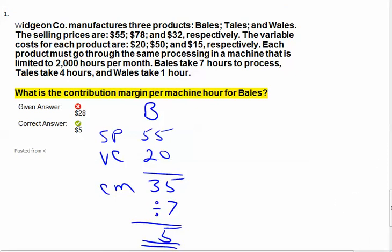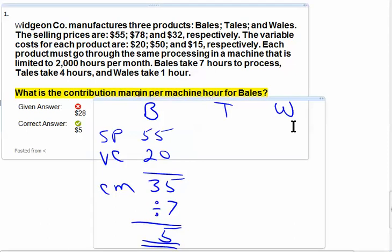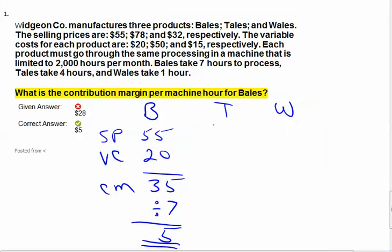I've answered the question they asked me. I'm going to expand this and go farther. Let's take a look at tails and whales. Tails has a selling price of $78 and variable costs of $50. Whales has a selling price of $32 and variable costs of $15. I can calculate my contribution margin for each: $28 for tails and $17 for whales.